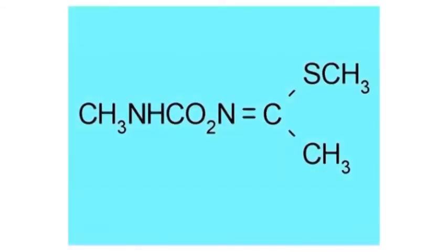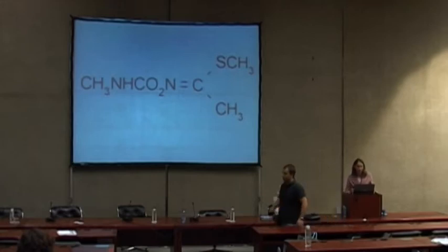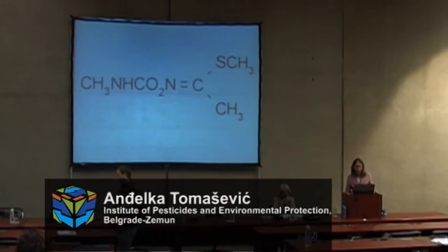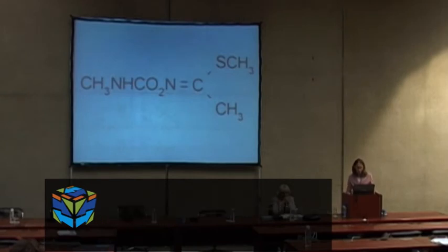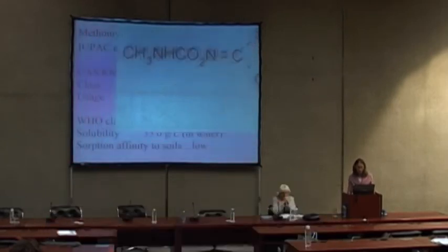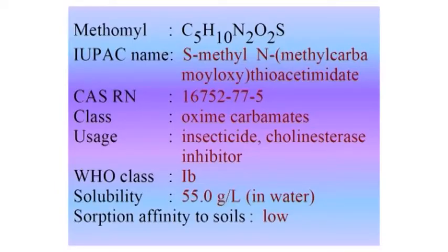Methomyl is a very famous pesticide. This is its structure — a very simple structure of methomyl, which is an aliphatic compound with a low molecular mass of 162. Methomyl belongs to the class of compounds known as oxycarbamates or carbamoyl oximes.